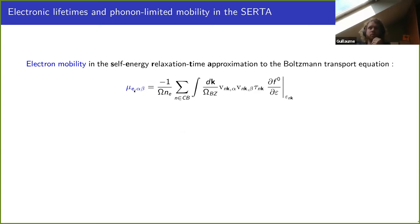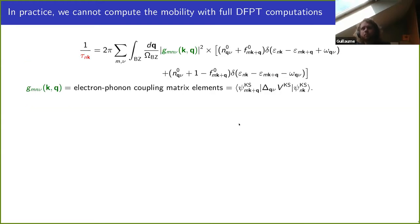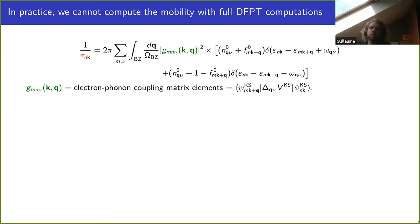We have an equation for the mobility where we have the electron velocities, the derivative of the Fermi-Dirac distribution function, and then the electron lifetimes that depend on the scattering of electrons by phonons in the system. Each phonon is characterized by the real vector q and a mode ν, and the scattering of an electron in state nk by a phonon qν depends on the electron-phonon coupling quantified by the matrix elements g. These describe the overlap between the wave function after scattering and the state nk+q, and the wave function before scattering modified by the scattering potential from the phonon.